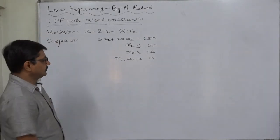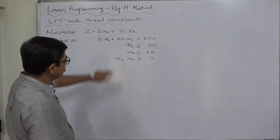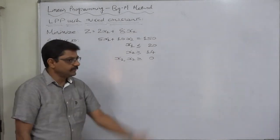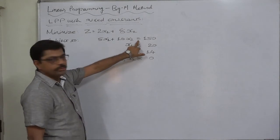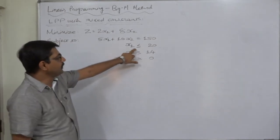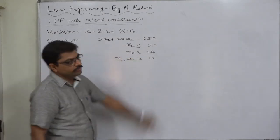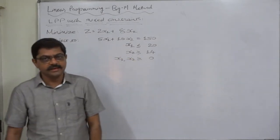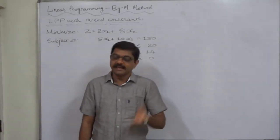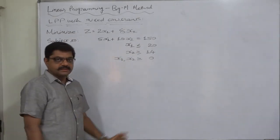Since we have all three signs, we use the Big M method directly. For the first constraint (equals-to sign), we introduce only an artificial variable. For the second constraint (less-than-or-equal-to), we introduce only a slack variable. For the third constraint (greater-than-or-equal-to), we introduce both a surplus variable and an artificial variable. However, there is one small thing in our favour for this particular type of problem.